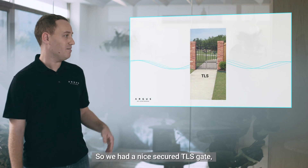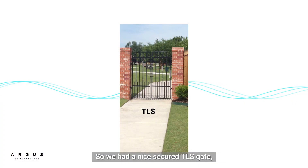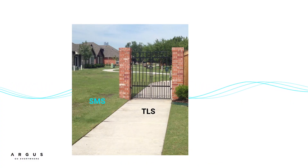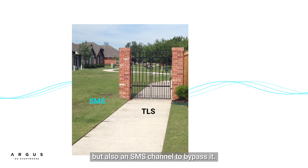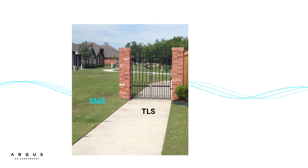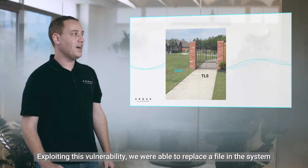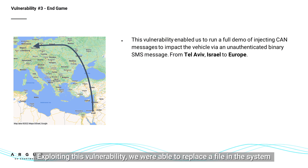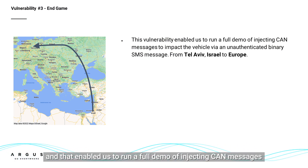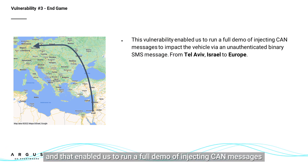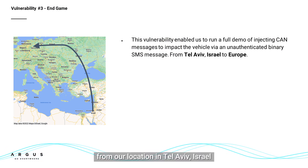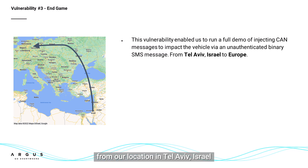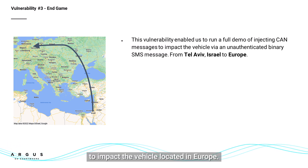So we had a nice secure TLS gate, but also an SMS channel to bypass it. Exploiting this vulnerability, we were able to replace a file in the system, and that enabled us to run a full demo of injecting CAN messages from our location in Tel Aviv, Israel to impact the vehicle located in Europe.